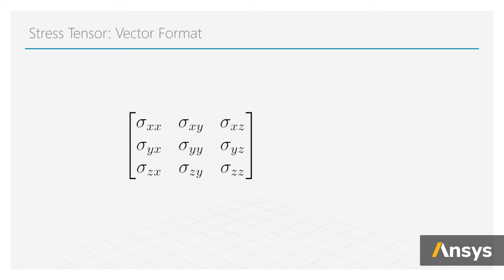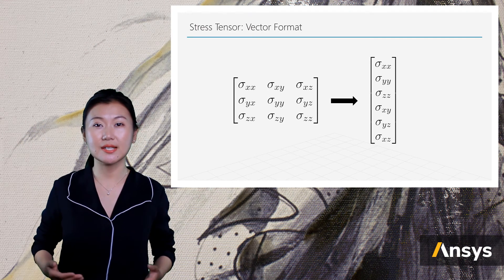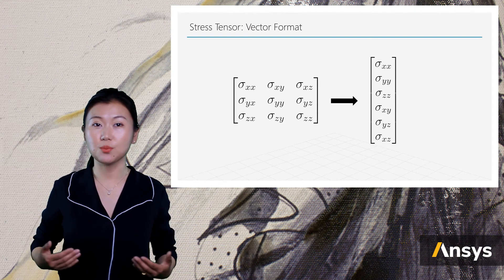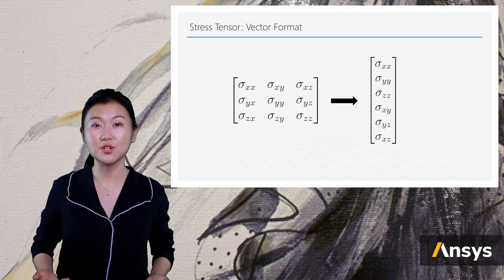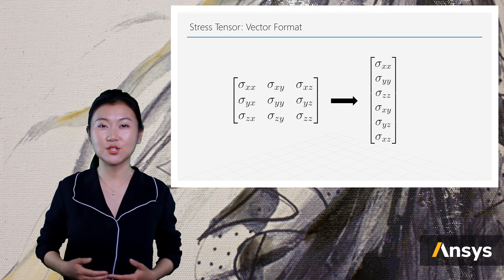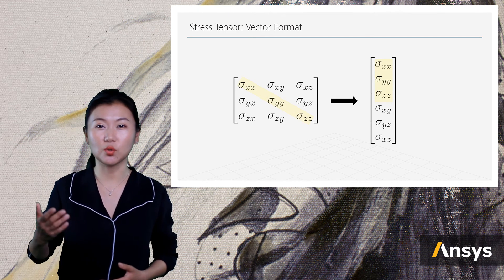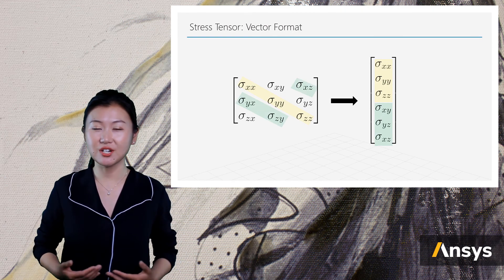For easier notation, a stress tensor is often expressed in vector format. Naturally, since there are nine components it should be recorded as a nine by one vector. However, because of the symmetry we can reduce the size of the vector to six by one. Here in the stress vector, the first three components are the normal stresses and the later three components are shear stresses.